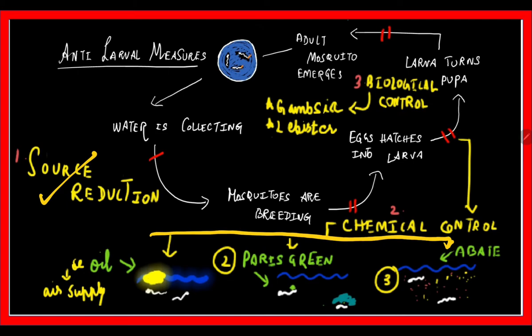First is source reduction. Next, if mosquitoes have already laid eggs in the water and larvae are forming, anti-larval measures include chemical control. Larvae are present on the surface and underwater, using siphon tubes to breathe except Anopheles. One method is pouring mineral oil, which interferes with the surface and prevents oxygen supply to larvae, causing larvicidal action.